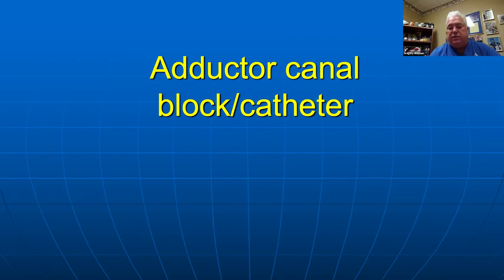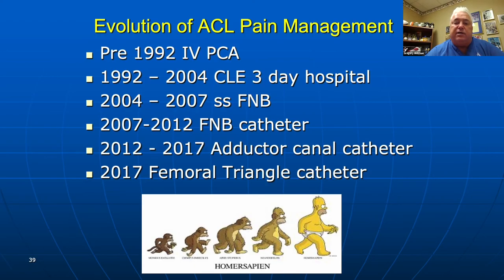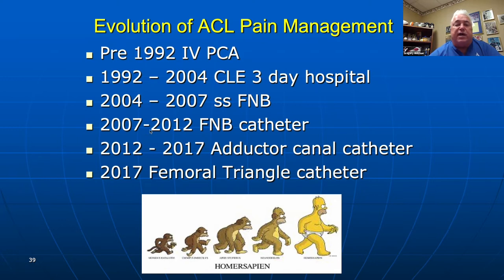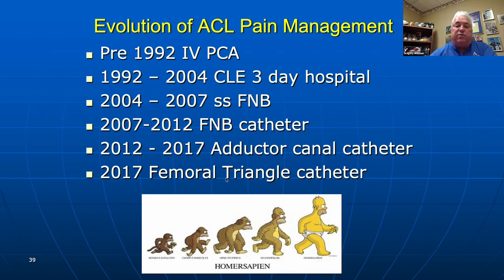Our adductor canal — we actually do a femoral triangle block. Let me talk about my career evolution here. I've been working with the world's most famous sports medicine surgeon for 30 years. Back in the nineties we kept ACL patients in the hospital three days; from about '98 to 2004 they became outpatients. In 2004 we started with a single-shot femoral nerve block. When we opened the Andrews Institute, we started sending patients home with femoral nerve catheters, then quickly jumped on the adductor canal bandwagon in 2012. In 2017, we moved more proximal to the femoral triangle catheter.